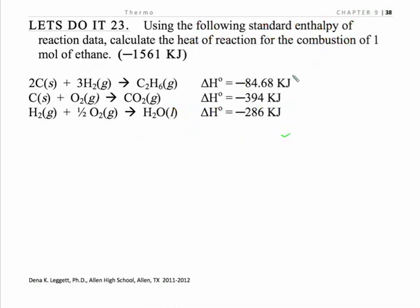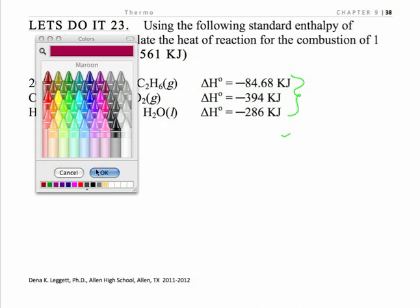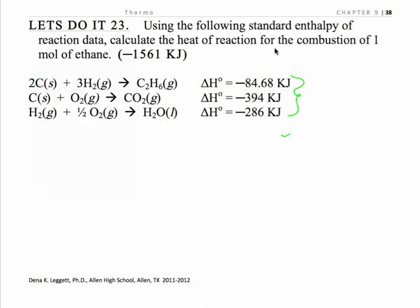We have a series of known reactions here, and we are given a goal reaction. We want to find the heat of combustion for one mole. This is very, very important. One mole of ethane. What that means is we have to balance the reaction such that we have one mole of ethane as our reactant. So here's my goal reaction. You always want to write that down because that's going to help us know how to manipulate this.